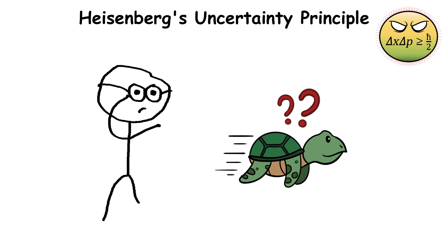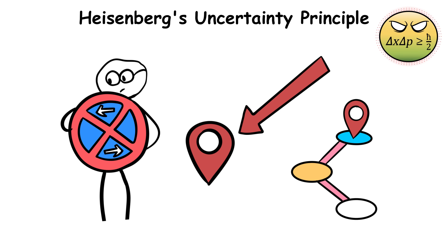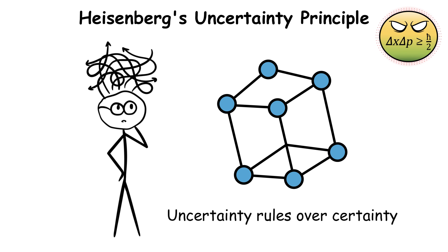The uncertainty principle is Heisenberg's way of telling us that there is no absolute certainty in pinning down particles' exact position and momentum in the quantum world, where uncertainty rules over certainty.